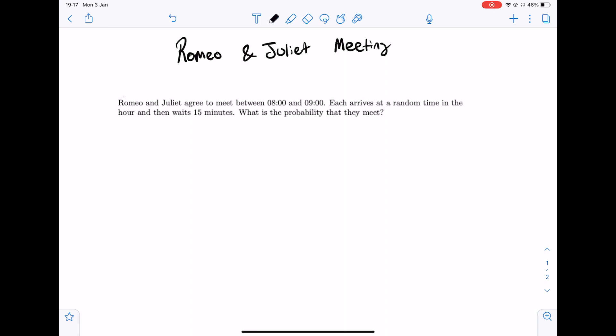Romeo and Juliet agree to meet between 8am and 9am. Each arrives at a random time in the hour and then they wait 15 minutes. What is the probability that they meet? So assuming that if it goes past the 15 minutes then they're just going to walk off and not going to meet. Therefore the probability of that is 0.